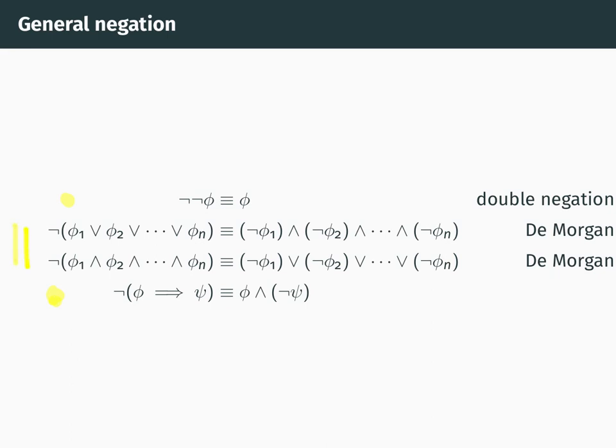So in the middle, these two things here, all I want to do here is point out that de Morgan's laws generalise to more than one OR or more than one AND. So for sets, we generalise de Morgan's laws to more than one intersection or more than one union and the same thing works for OR and for AND.